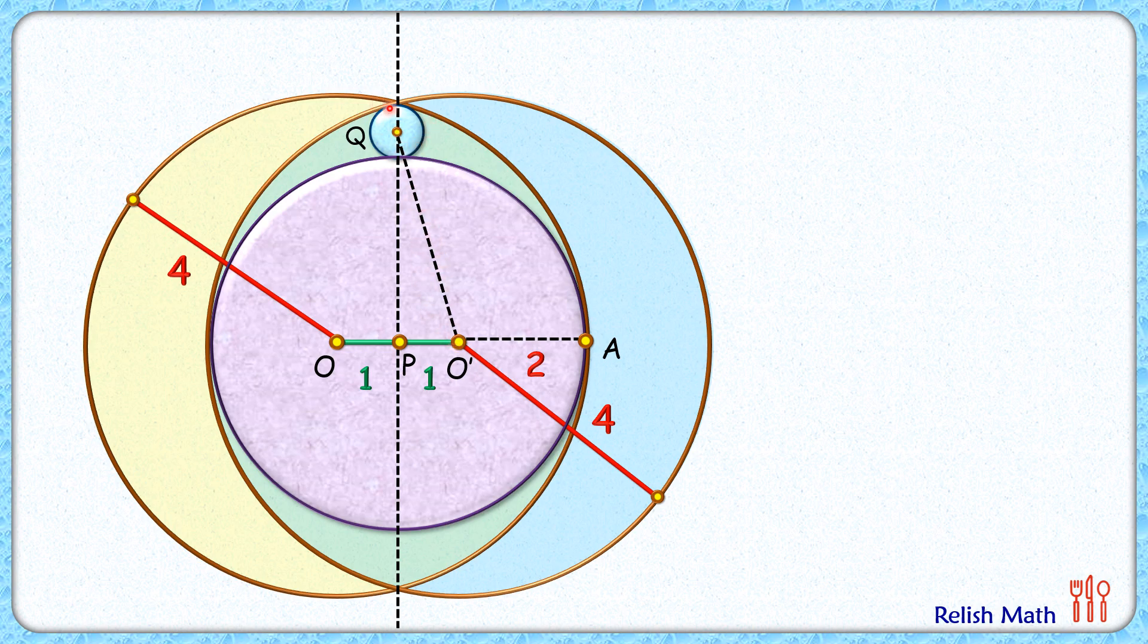Now how about QP length? QP length will be the radius of purple circle plus radius of this small blue circle. The purple circle radius is 1 plus 2, or 3 cm. Thus PQ length will be 3 plus R cm.